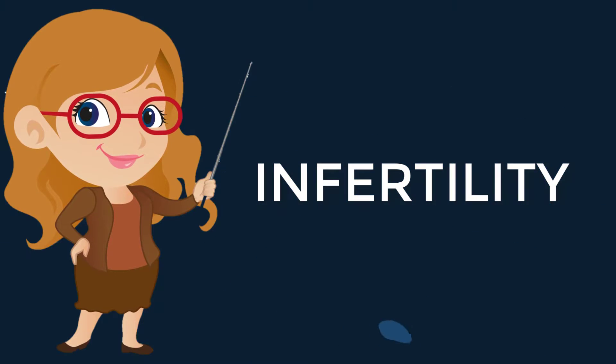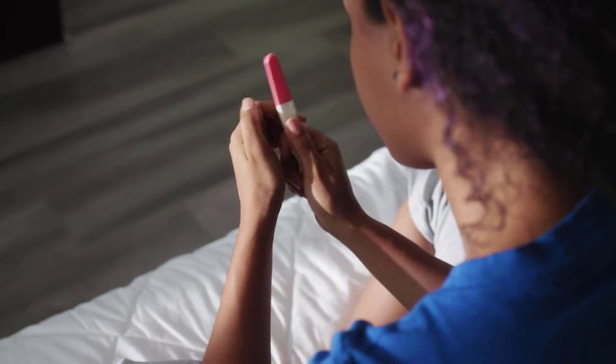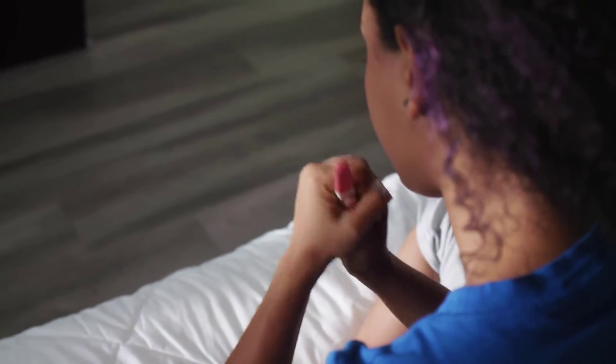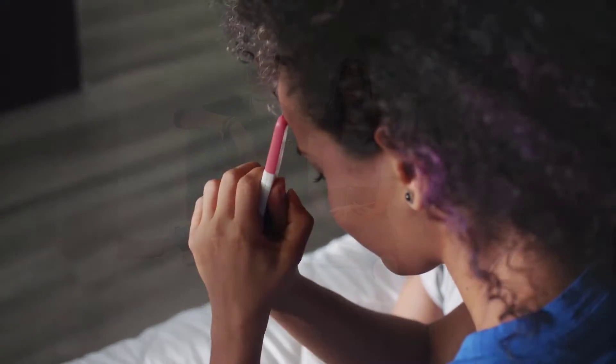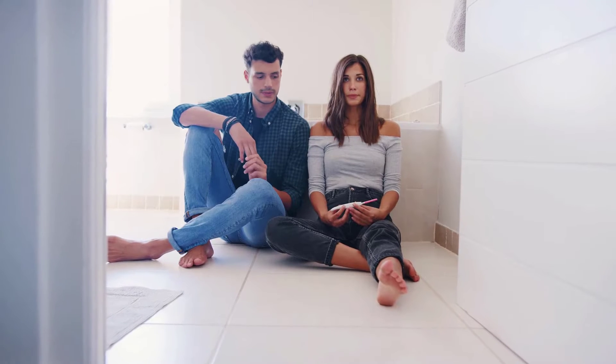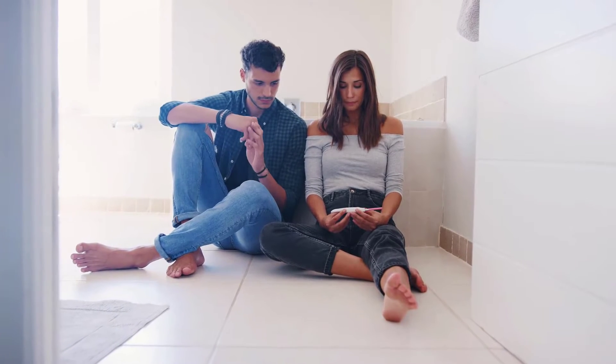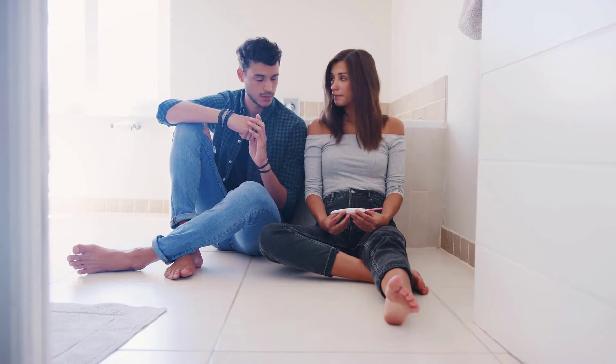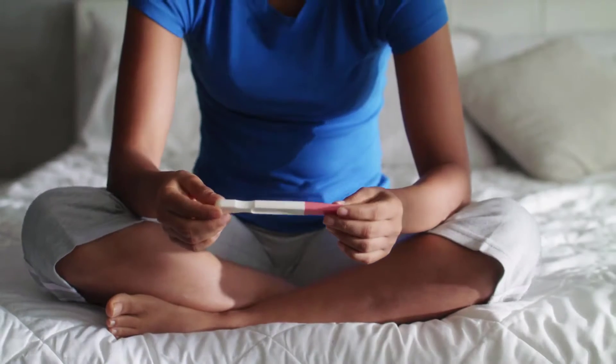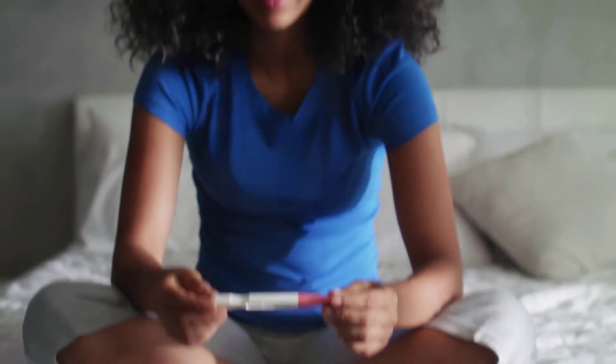Infertility is defined as the inability to conceive a child after one year of regular sexual intercourse, unprotected by contraception. Secondary infertility is the inability to conceive after a previous pregnancy. Many people take the ability to conceive and produce a child for granted, but infertility affects more than 6 million Americans, or 15% of the reproductive age population.